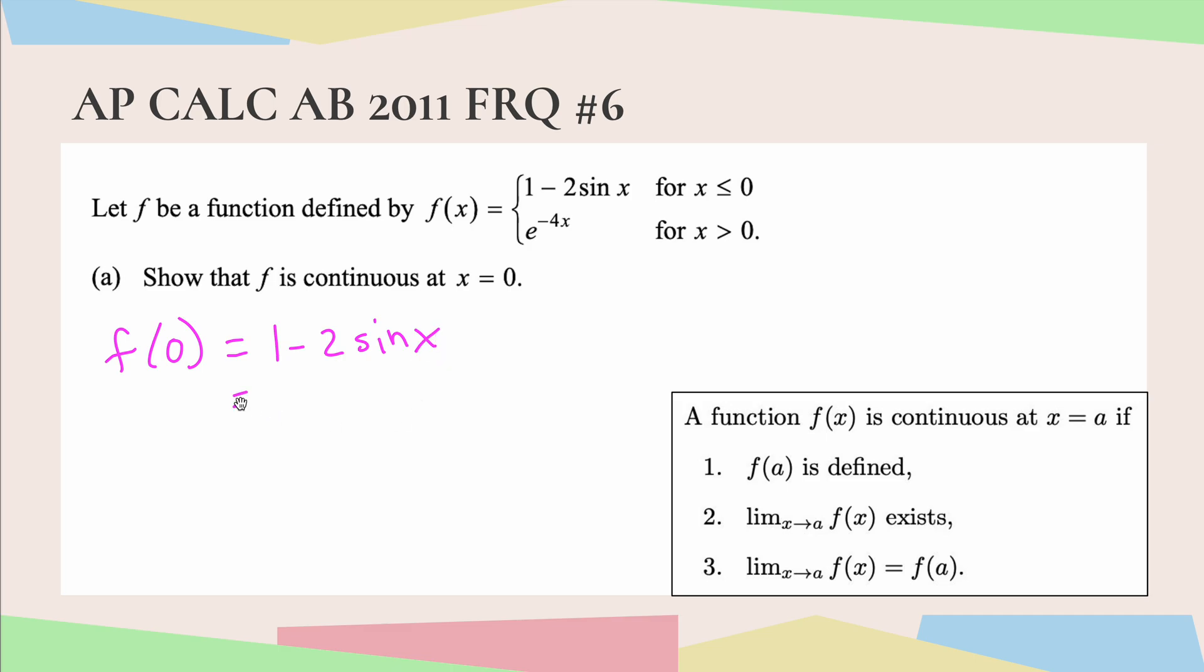And so for f of 0, it's going to be 1 minus 2 times sine of x. Plugging in 0 there, this should have been an x here. This is f of 0. Now the sine of 0 is just 0, so this entire term here is 0, and 1 minus 0 is just 1. So we know that f of 0 is equal to 1.